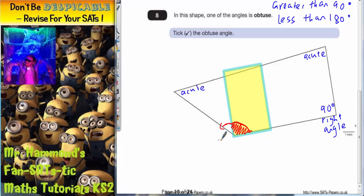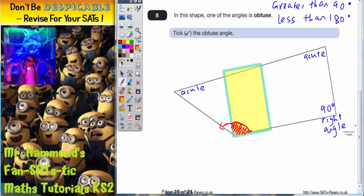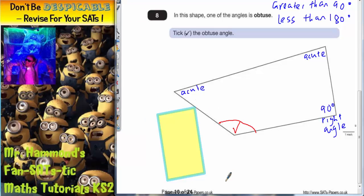And if it's over 90 degrees but still less than 180 degrees, it is going to be obtuse. So that is the angle that you need to tick. Just get rid of that and we are in a position now to tick that angle, so that is the angle that needs to be ticked.